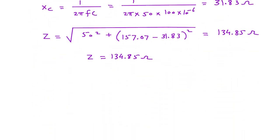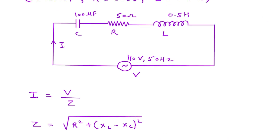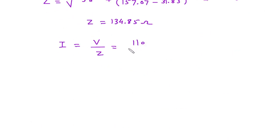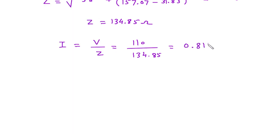Now we can find the value of current I. Current I = V/Z = 110/134.85 = 0.815 ampere. Since it is current, its unit is ampere. Therefore, current I = 0.815 A.